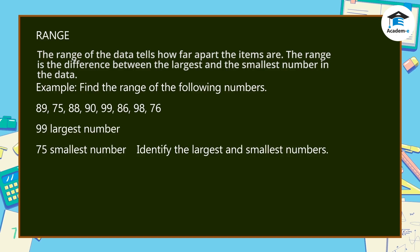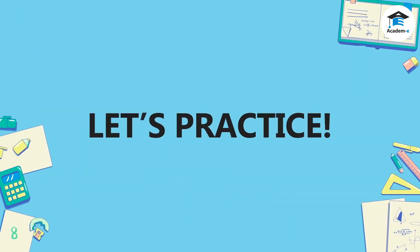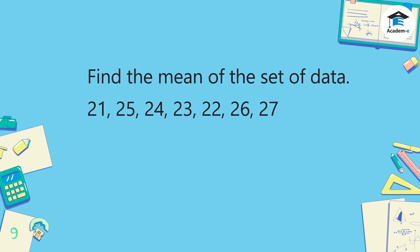Subtract the largest and the smallest numbers: 99 minus 75. Therefore, the range of the given set of data is 24. Let's practice — find the mean of the set of data.